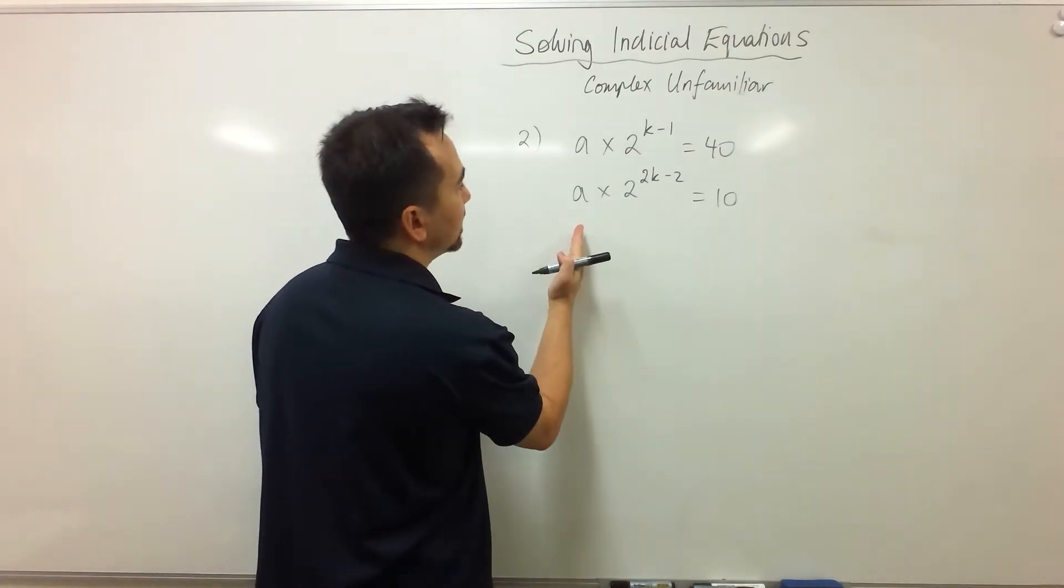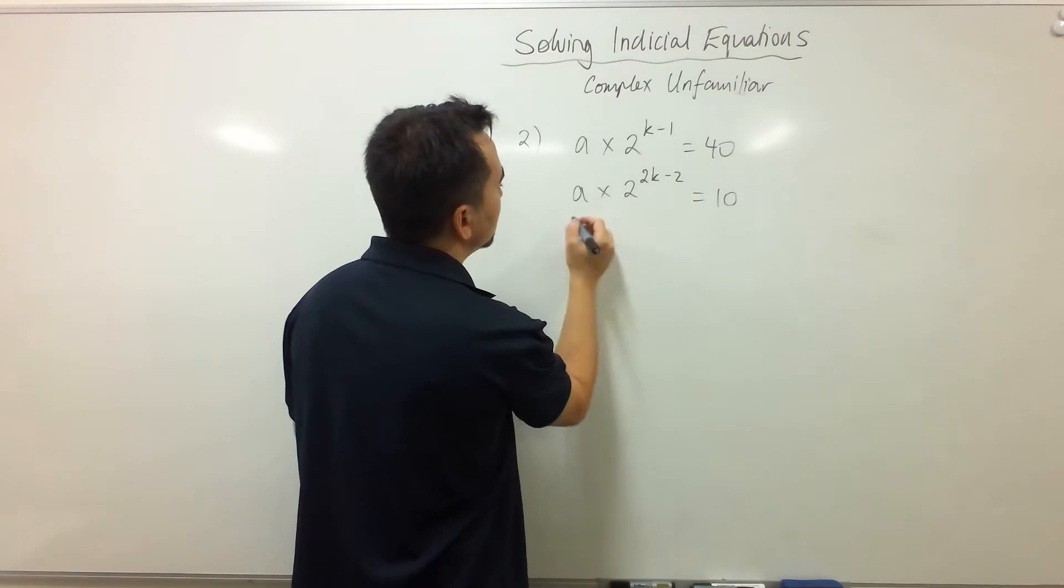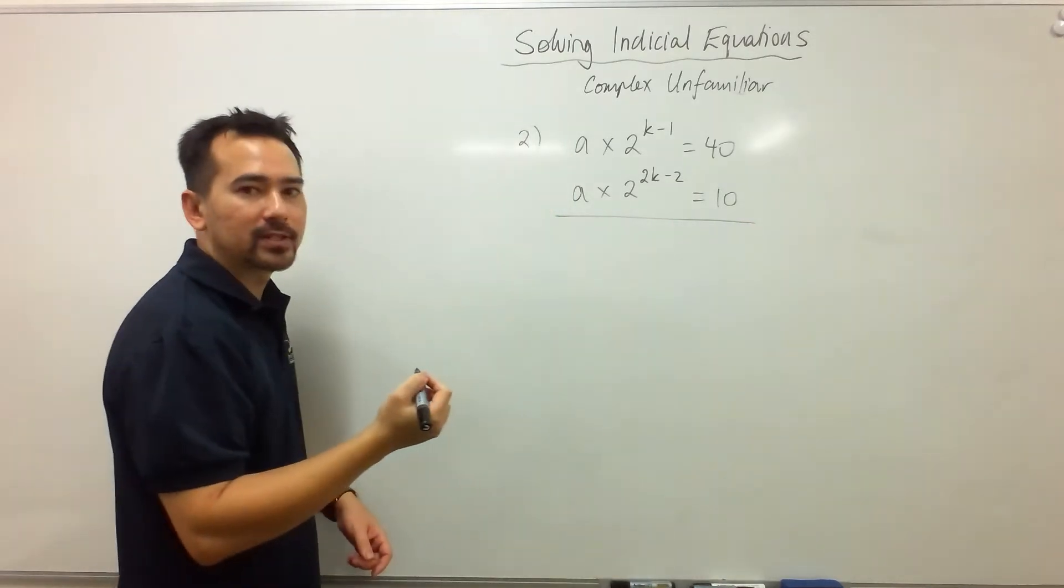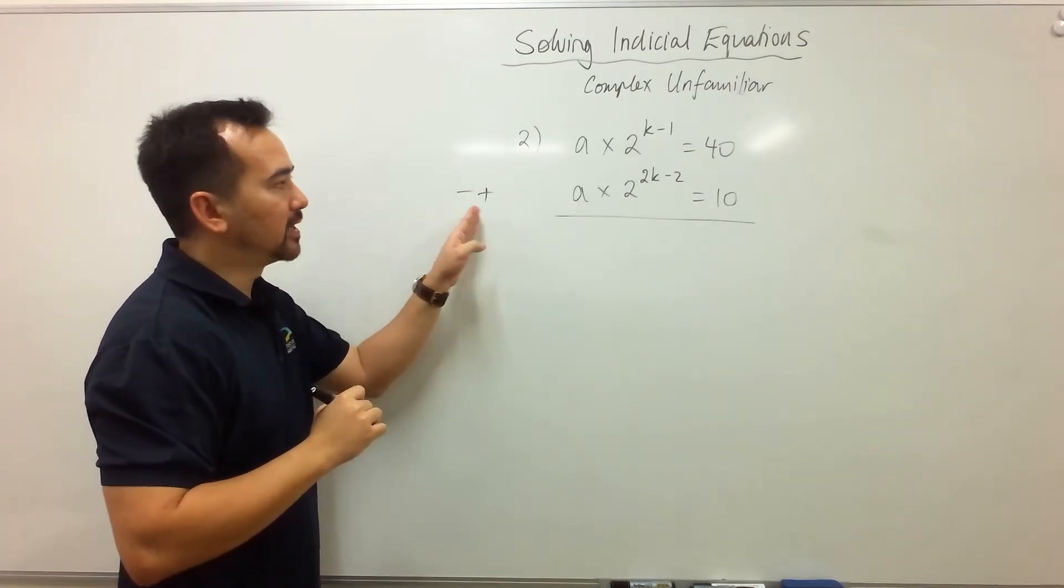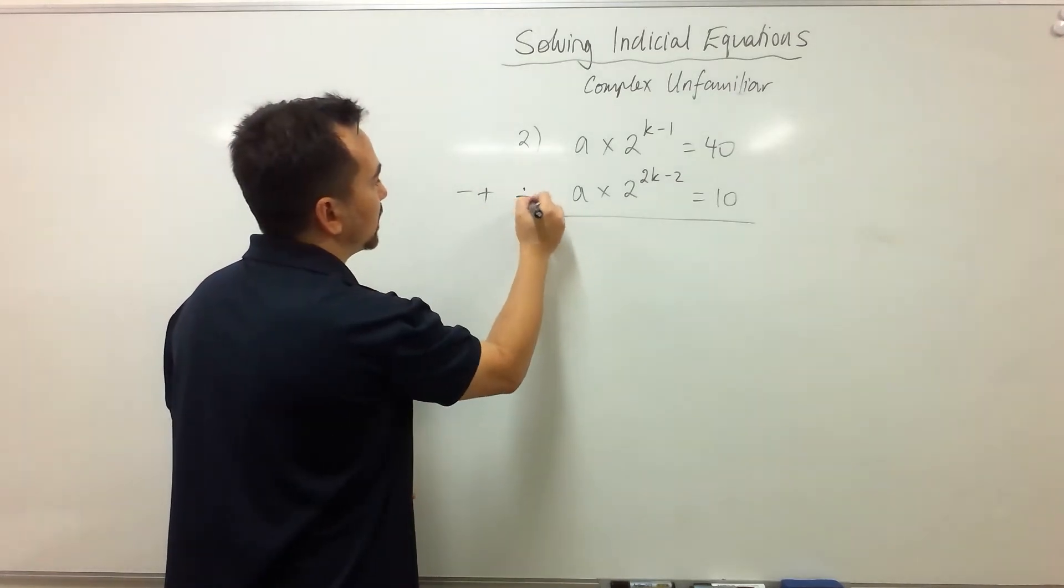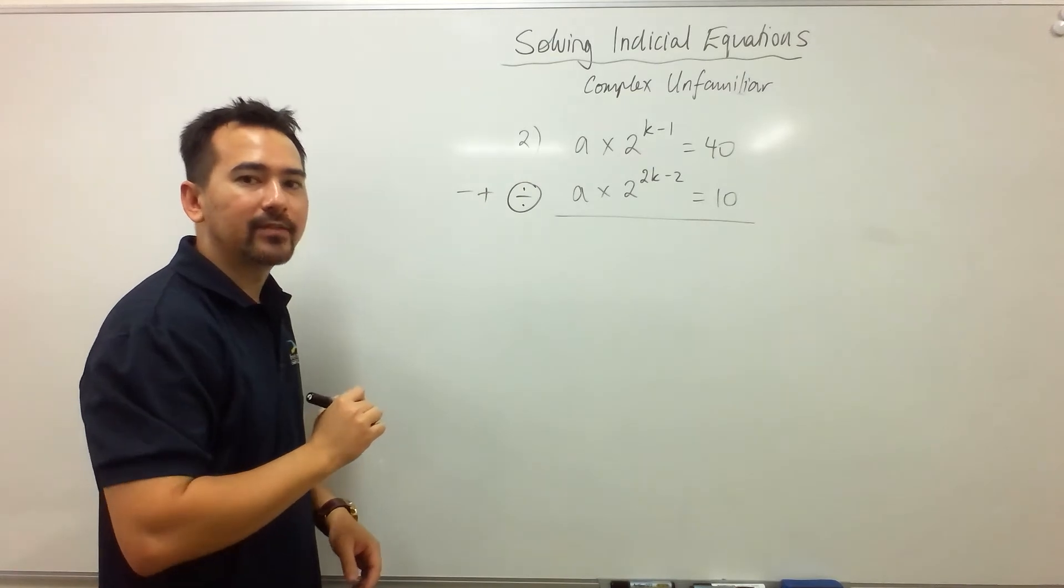Okay, notice that the a's are lined up, the k's are lined up, and so is my constant, so this has been set up for the elimination method. And you're probably used to using the subtraction and the addition, but today I'm going to show you that you also have the dividing option.